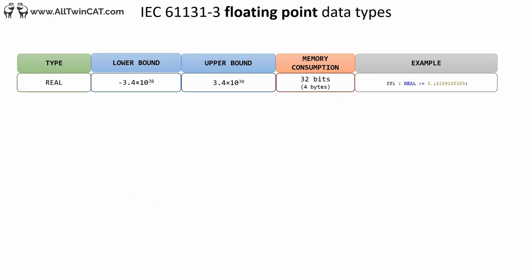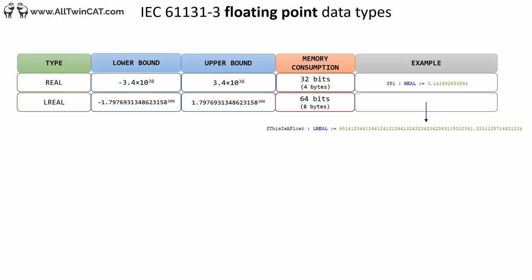The floating point data types are used to represent floating point values. There are only two variants: REAL and LREAL. REAL occupies 4 bytes and LREAL occupies 8 bytes. The equivalent to REAL and LREAL in the C++ world are the float and double data types respectively.